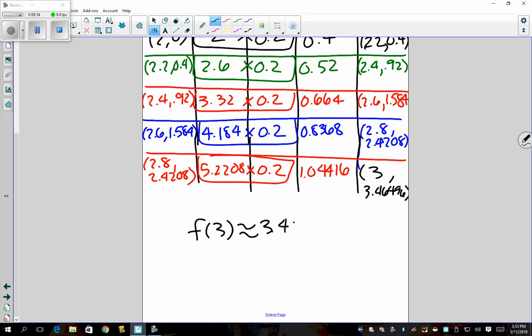And so f of 3, I estimate, is about 3.4649. So that's how we're using Euler's method to help better approximate these values. 3.4649 is probably a pretty good approximation. But if we use the smaller step size, 0.002, we get an even more accurate estimation. But again, it all considers where you start off. So we started going from 2 to 3. If we went from 2.5 to 3, that might be a little bit more accurate. If we went from 1 to 3, that would probably be less accurate. So there's a lot that we can do with Euler's method, but this is pretty much the process for it.